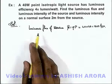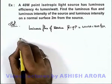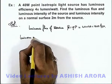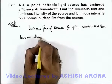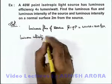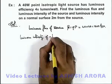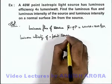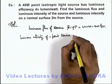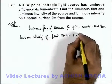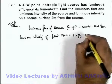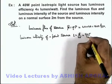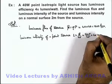Using the luminous flux, we can calculate the luminous intensity of a point isotropic source. This is directly given as I = φ / 4π. So this will be 160π divided by 4π, which equals 40 candela.